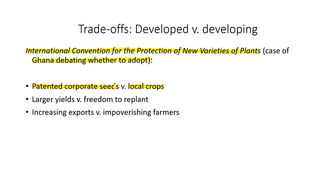Patented corporate seeds would benefit the multinational corporations that make them, but would also help get countries off local subsistence farming. The trade-off is larger yields — which could help exports and improve the overall economy — versus the freedom to replant what you want. Increasing exports, if coordinated politically, could improve their overall economic situation; otherwise, farmers continue trying to survive day-to-day. This isn't about what's right or wrong — it's about what has shown, in the global capitalist system, to improve economies.